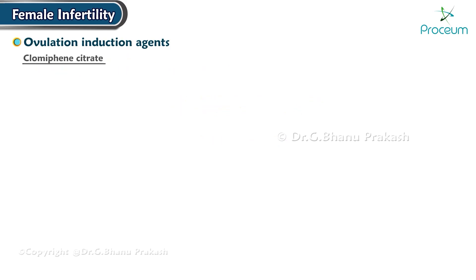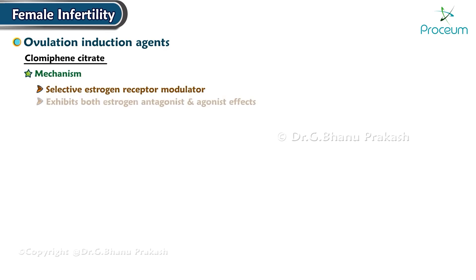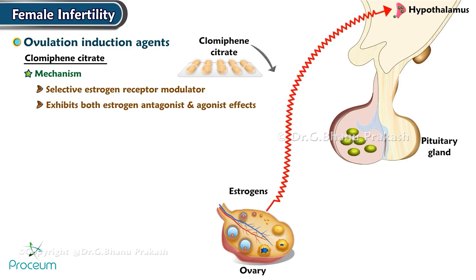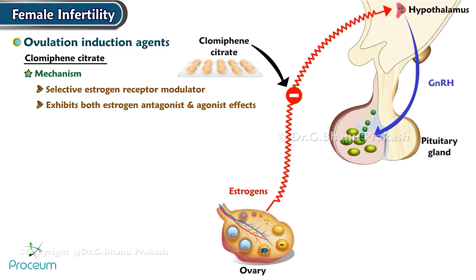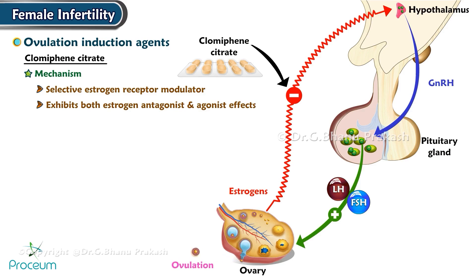First, there's clomiphene citrate. Mechanism: Clomiphene citrate is a selective estrogen receptor modulator that exhibits both estrogen antagonist and agonist effects. Clomiphene promotes the release of gonadotropins, like follicle-stimulating hormone and luteinizing hormone, by inhibiting the negative feedback of estrogen on the hypothalamus, enhancing the natural process of ovulation.